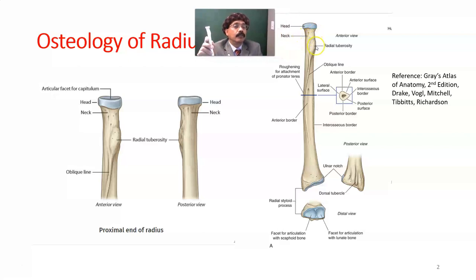Posteriorly, there is insertion of biceps brachii; anteriorly it is separated by a bursa. These are the borders. The interosseous border is the most important border — it is very prominent and sharp. Other borders are distinct only partly. This is the anterior border, with the oblique line going down here.